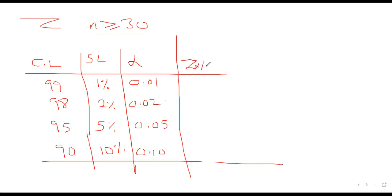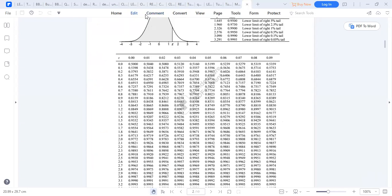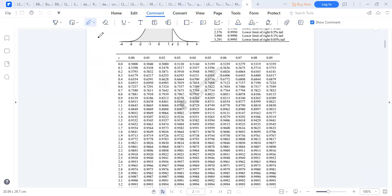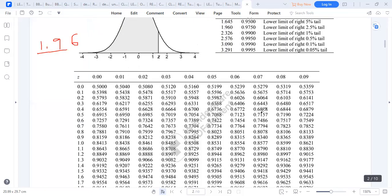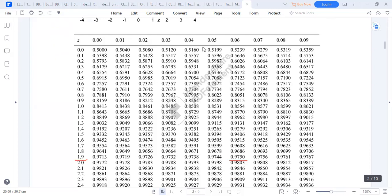Pay particular attention to the statistical tables. To find the value for Z = 1.96, you go under 1.9 and 0.06 to find the value. The reading is 0.9750. Similarly, for Z = 1.27, you go under 1.2 and 0.07, giving a reading of 0.8980.